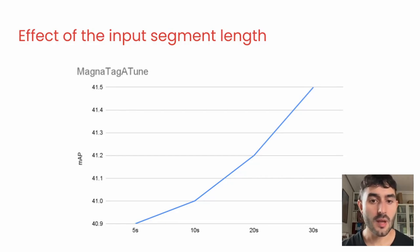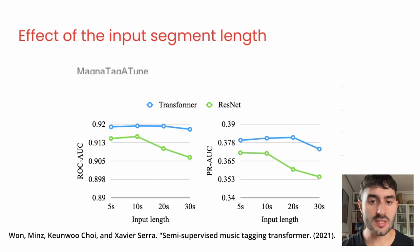In the third experiment, we modify the input sequence length from 5 up to 30 seconds. We find that the results consistently increase in the downstream task. This contrasts with previous studies using CNNs where the performance tends to saturate at around 4 seconds.